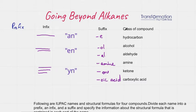Then depending on the class of compound is what our suffix will be. So if we just have a hydrocarbon, just hydrogens and carbons, the suffix will be 'e' at the end. If we have an alcohol, our name will end in 'ol'.